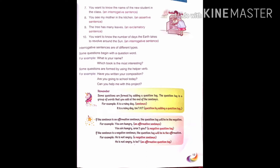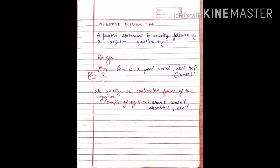Like a statement, a question tag can also be positive or negative. Let's look at the negative tag first. A positive statement is usually followed by a negative question tag. For example, 'Ram is a good artist, isn't he?' We usually use contracted forms of the negatives — examples are aren't, wasn't, shouldn't, can't. Here we have used the negative question tag 'isn't he,' and the pronoun form of the subject, 'he,' has been used. We have used the contracted form 'isn't,' which is the contracted form of 'is not.'